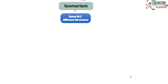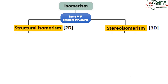When we talk about the types of isomerism, mainly isomerism is classified into two types. Number one type is called structural isomerism and the second type is called stereoisomerism. When we talk about structural isomerism, this one can be considered as two-dimensional, and stereoisomerism is three-dimensional.